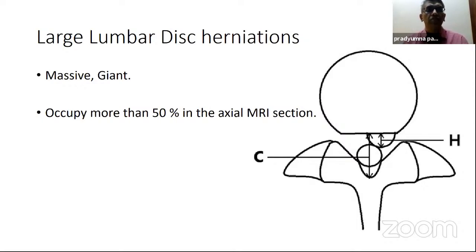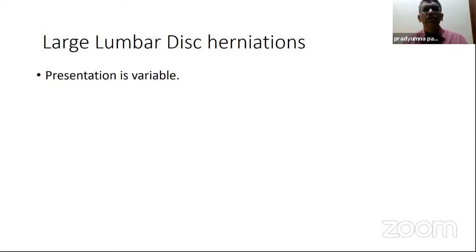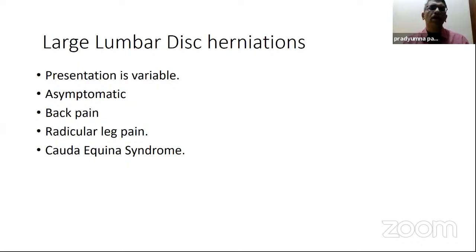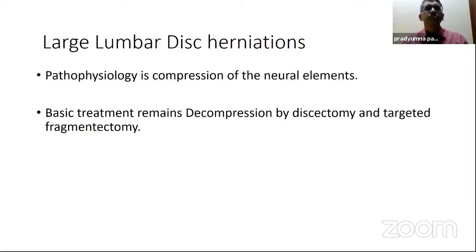Whenever we see a large lumbar disc herniation, if we correlate clinically, the presentation is very varied. All of us have seen patients who are asymptomatic and just on screening they have a huge large disc — even with probing questions, absolutely no symptoms. Some have mild back pain. Obviously, the commonest is radicular leg pain. Very rarely, you have a large lumbar disc with cauda equina syndrome. A rarer thing is an intradural disc herniation. In pathophysiology, for any lumbar disc herniation, the main cause is compression of neural elements, and the basic treatment remains decompression by discectomy.